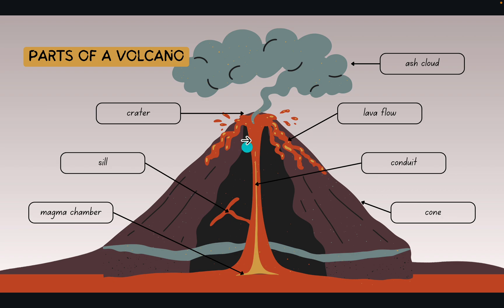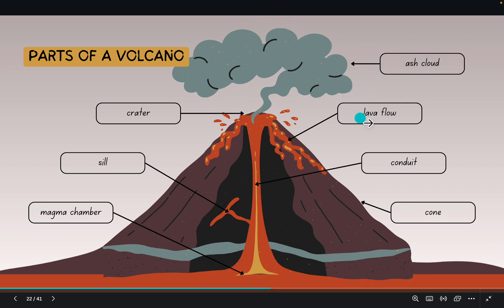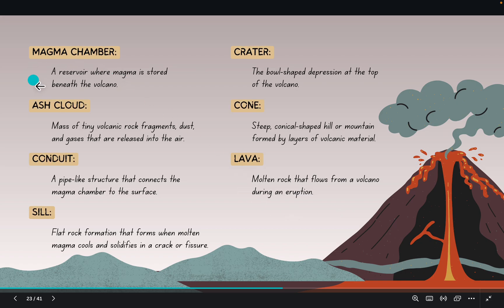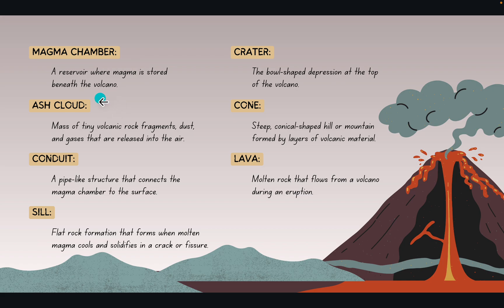Now I'll be talking about the parts of a volcano. Here is the crater. Here's the sill. This is the magma chamber. The cloud here is the ash cloud. Lava flow. The conduit. And the cone — that's just typically the shape. A magma chamber is a reservoir where magma is stored beneath the volcano. An ash cloud is a mass of tiny volcanic rock fragments, dust, and gases released into the air. The conduit is a pipe-like structure that connects the magma chamber to the surface. A sill is a flat rock formation that forms when molten magma cools and solidifies in a crack or fissure. The crater is a bowl-shaped depression at the top of a volcano. The lava is molten rock that flows from a volcano during an eruption — lava outside, magma inside.